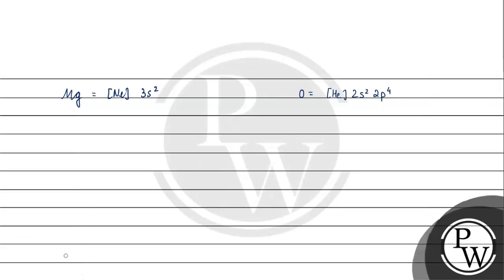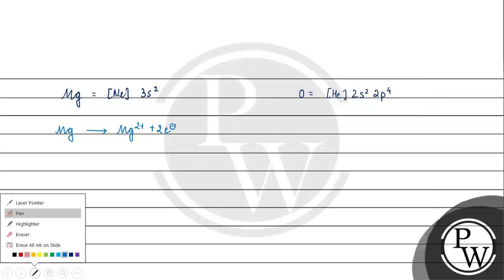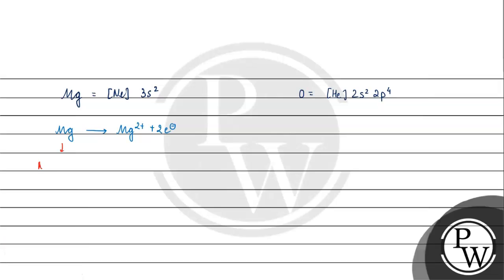Magnesium transfers its two electrons to oxygen. So both achieve a noble gas configuration. Oxygen gains two electrons to become O²⁻, and magnesium loses two electrons to become Mg²⁺. This gives us the same number as a noble gas configuration.